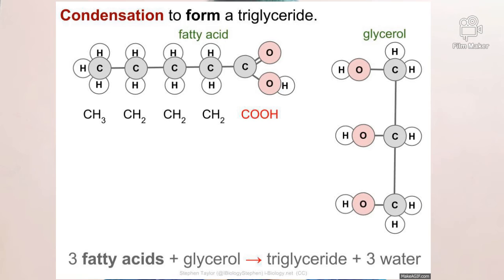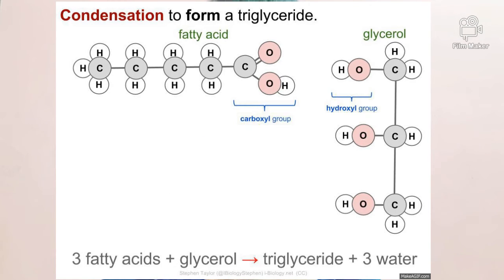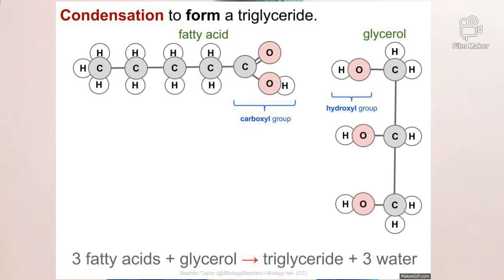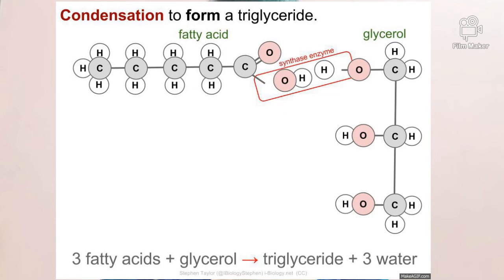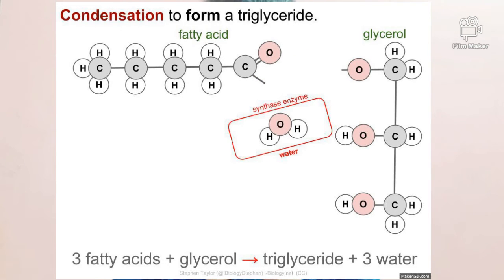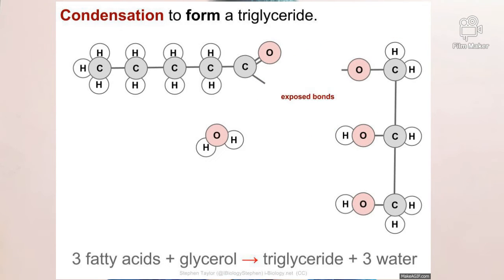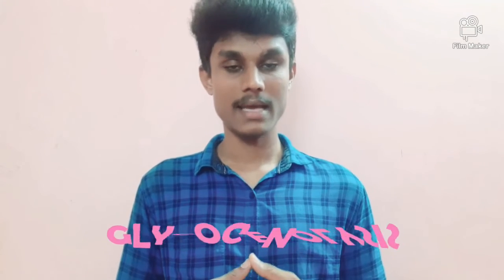The endoplasmic reticulum also stores lipids. It helps in the formation of triglycerides and phospholipids. Phospholipids form the structure of the plasma membrane, and triglycerides are formed from three fatty acids.